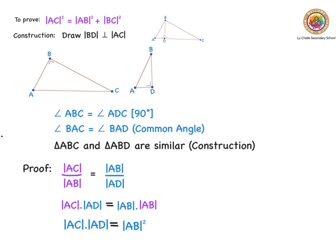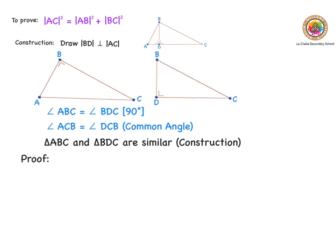Now we're going to repeat the exact same process, except this time we're going to take the main triangle with the bigger of these two smaller triangles. Angle ABC is equal to angle BDC — they're both 90 degrees, both right angles. The other thing we can say is that angle ACB is equal to angle DCB. They're the exact same angle — a common angle.